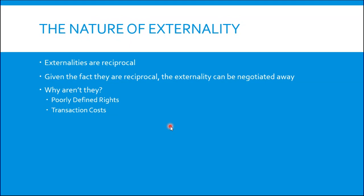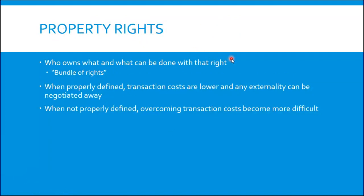Given the fact that externalities are reciprocal, they can be negotiated away. There are incentives on both sides to negotiate away this externality and to bring the private costs and the public costs into alignment. But why aren't externalities always negotiated away? There are two main reasons: transaction costs, and poorly defined property rights. When rights are poorly defined, they're not doing their job of clarifying who owns what and what can be done with that ownership. We talk about property rights being a bundle of rights — a group of claims on what you can and cannot do with your property.